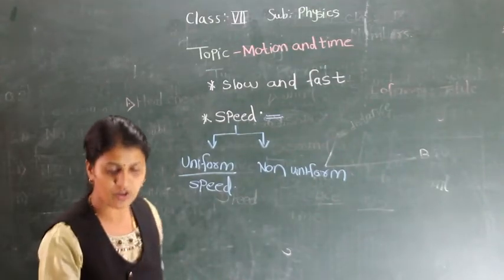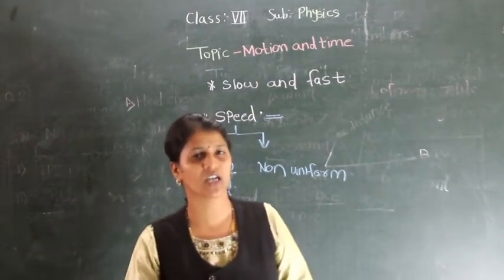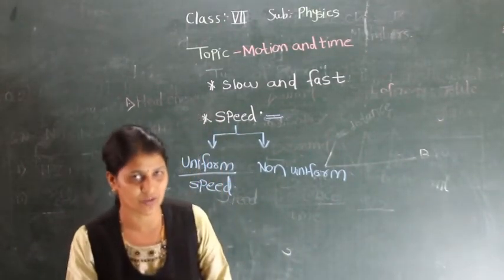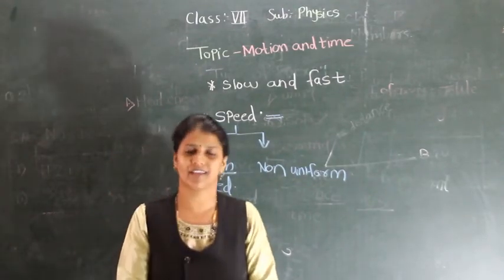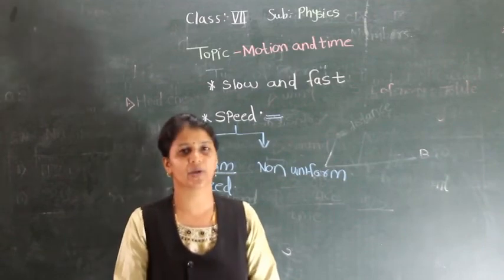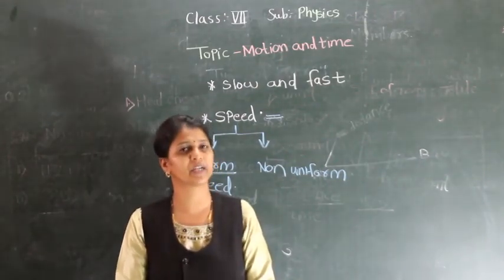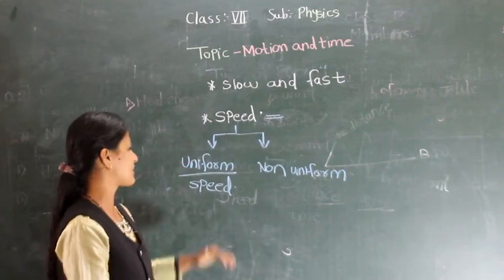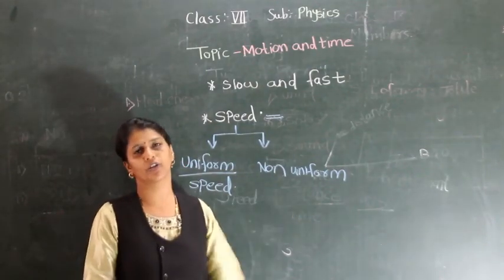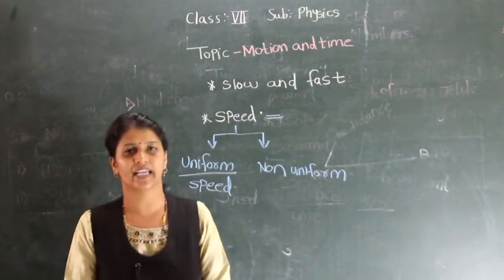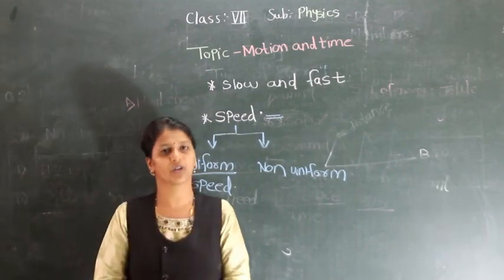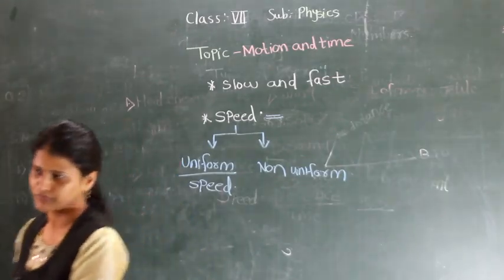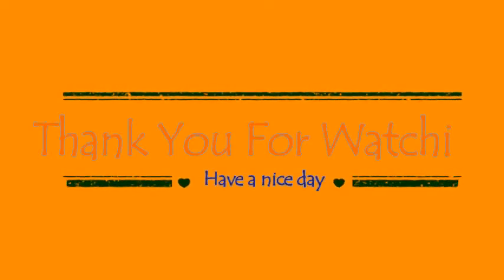In today's video we discussed about slow and fast, what exactly speed is, the SI unit of speed which is meter per second, and uniform and non-uniform speed. In the next video we will discuss about distance and displacement. Thank you.